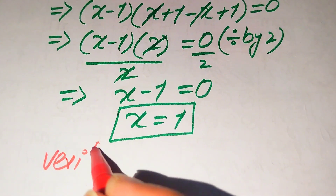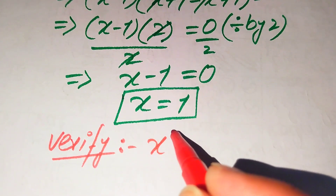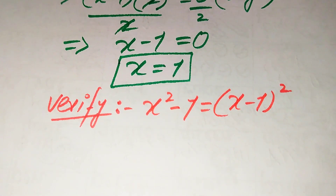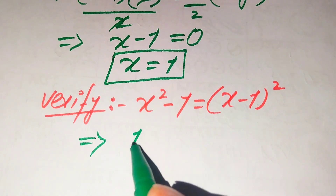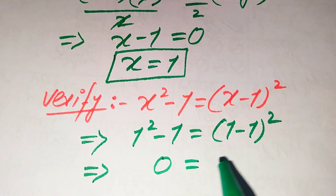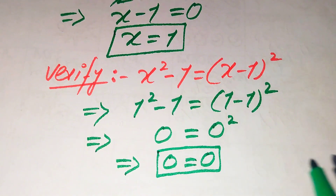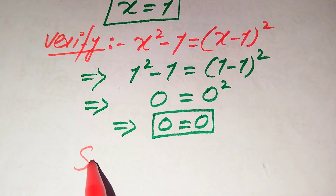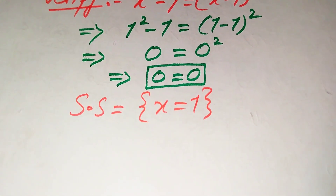In the next steps we verify whether x = 1 satisfies the given equation. We substitute x = 1 into x² - 1 = (x - 1)²: we get 1² - 1 = (1 - 1)², which gives 1 - 1 = 0² and 0 = 0. Both sides are equal, confirming x = 1 satisfies the equation. So the solution set is {x = 1}.